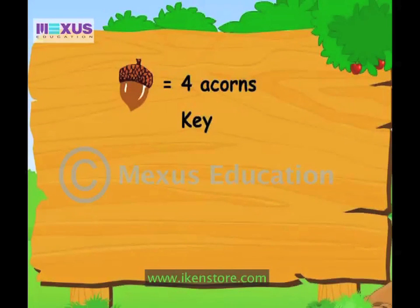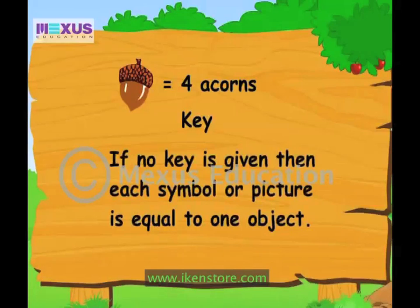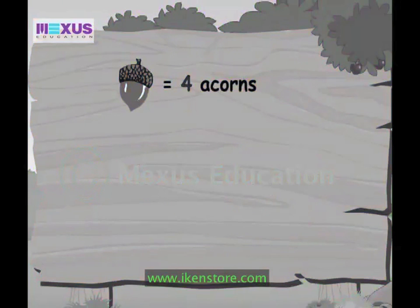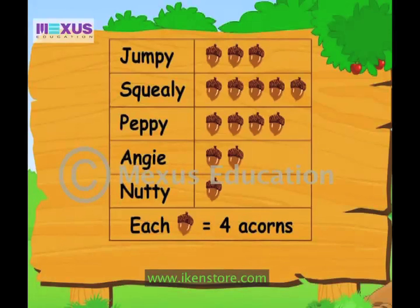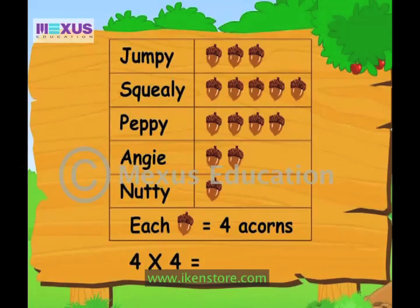A key? Yes, the key tells you exactly what the symbol means. If no key is given, then each symbol or picture is equal to one object. I get it now. The number four here is known as the scale. It is the number of objects the symbol is equal to. So now tell me, how many acorns does Peppy have? There are four acorns drawn here, so Peppy has four multiplied by four, which equals sixteen acorns in all.